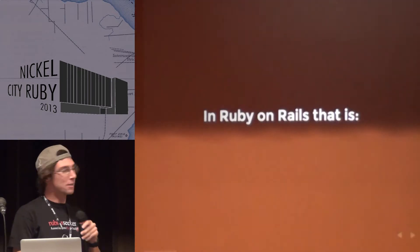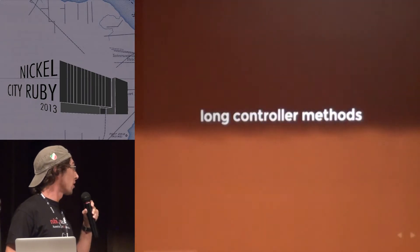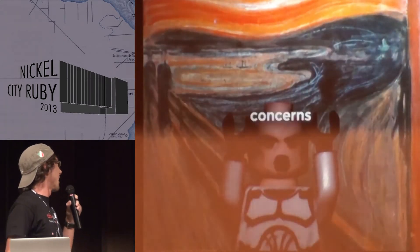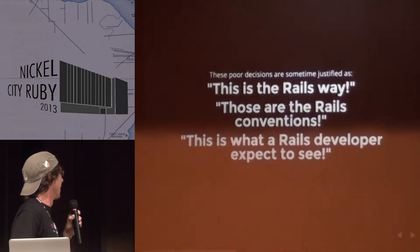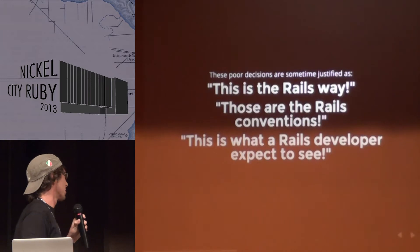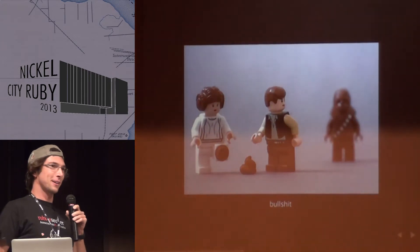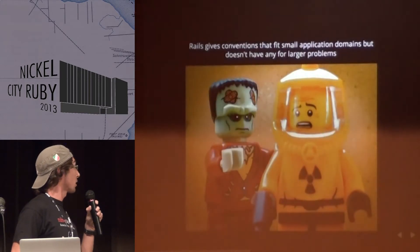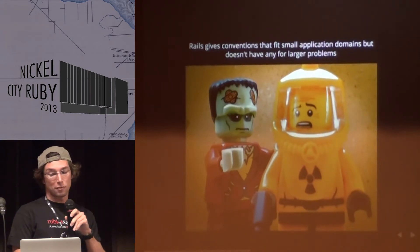In Ruby on Rails, that means assigning too many responsibilities to Active Record models, fat controller methods, helper models doing a gazillion things, and fixing it just with concerns. Those poor decisions are sometimes justified as 'this is the Rails way,' these are the Rails conventions, and this is what a Rails developer expects to see. But I don't expect to see a model that is 500 lines long. Rails gives a lot of conventions that fit small application domains, but they don't always fit well for larger problems.